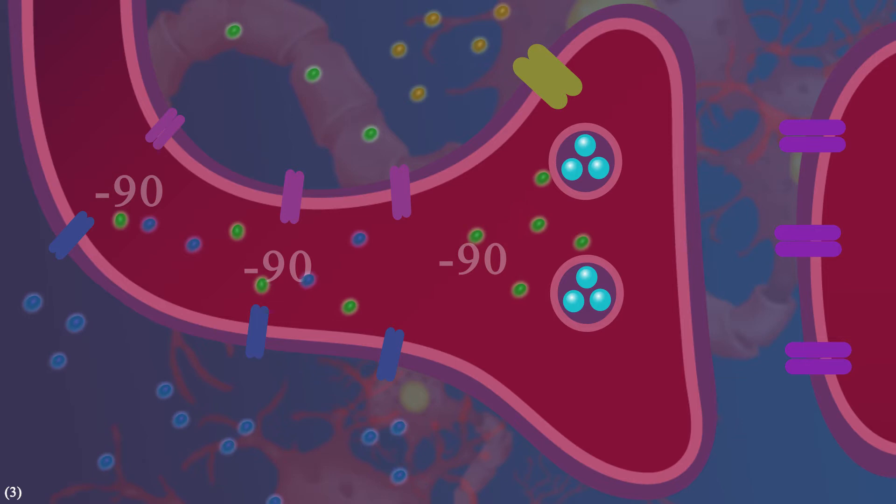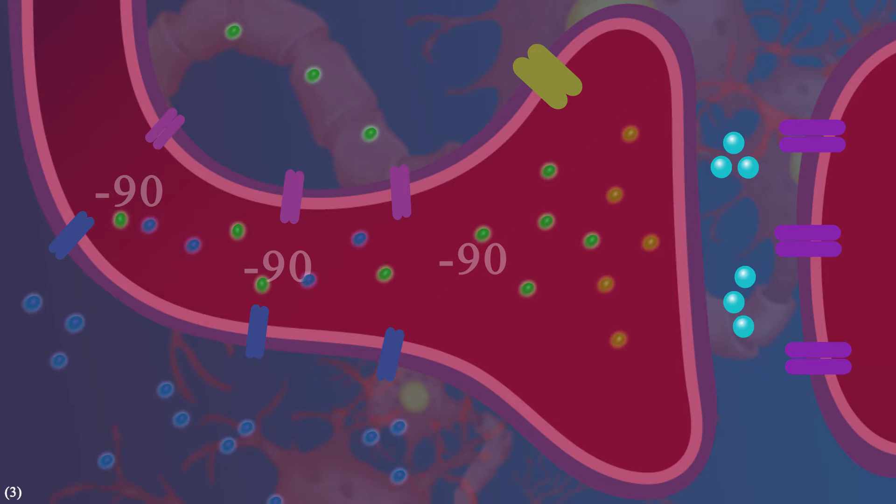When the action potential reaches the terminal of an axon, it triggers the calcium voltage gated channels to open. So calcium ions can enter the cell. They are responsible for the fusion of the vesicles with the cell membrane and release the neurotransmitter, which in our case is dopamine, into the synaptic cleft. Dopamine connects to its receptors at the postsynaptic neurons and inserts its effect.